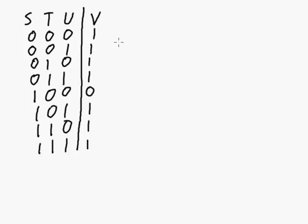Now if we're doing the sum of products expressions, hopefully you've seen before, what we do is we look at all of the rows where the output is a 1, and then we create the product expression for that particular row. So for this row we've got not S, not T, not U. For this row we've got not S, not T, U. For this row we've got not S, T, and not U. And for this row, not S, T, and U.